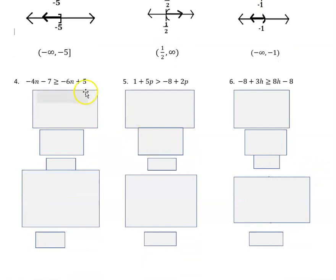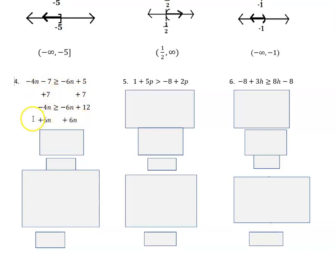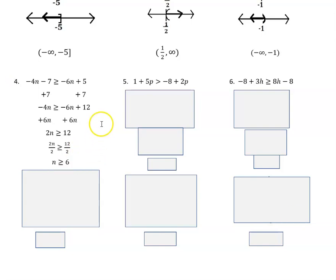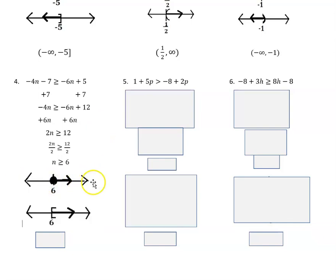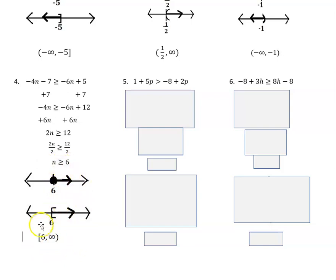For the next one I do this in two steps: I add seven to both sides to get rid of the seven, then add six to both sides to move those n terms, giving me two n is greater than or equal to twelve. Then I divide both sides by two — dividing by a positive, so I do not reverse the direction of the arrow. On the graph I can have a closed circle going to the right or a bracket going to the right. In interval notation we're starting at six with a bracket, since we have an equal-to part, and going to positive infinity.